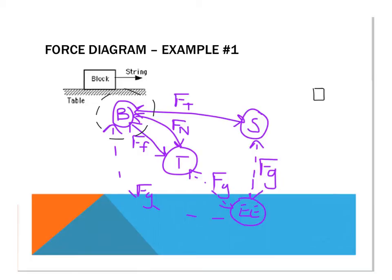We're going to do the force due to gravity first. The force due to gravity is always directed towards the center of the earth, and on our force diagrams we'll generally represent that as down. So F_G for force due to gravity, then we'll add some subscripts. Since we can't see the other objects in a force diagram, we're going to use subscripts to show what objects are applying that force to the block. In this case, the entire earth is applying this force to the block.